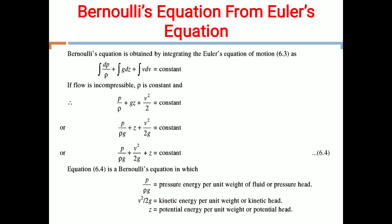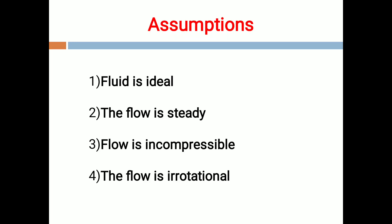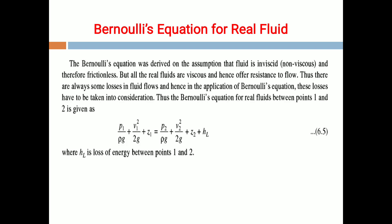Z is the potential energy per unit weight or potential head. The assumptions of Bernoulli's equation are: number one, the fluid is ideal, meaning viscosity is zero; number two, flow is steady; number three, flow is incompressible; and number four, the flow is irrotational.